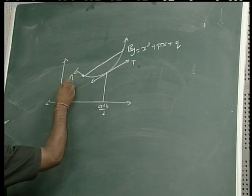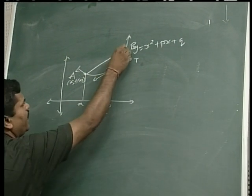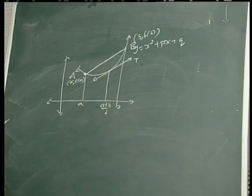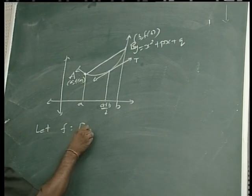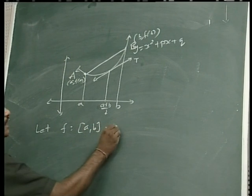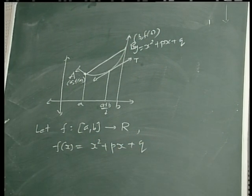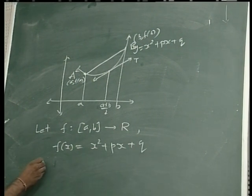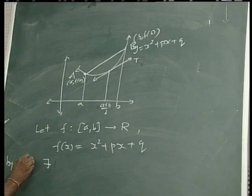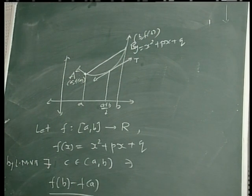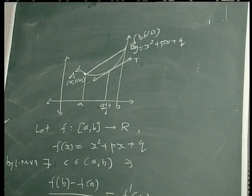Suppose point a has coordinates (a, f(a)) and point b has coordinates (b, f(b)). Now we consider the function f from closed interval [a, b] to ℝ as f(x) = x² + px + q. This function is everywhere continuous and everywhere differentiable because it is a polynomial function. Therefore we can use LMVT, and by LMVT there exists a constant c in the open interval (a, b) such that f(b) minus f(a) upon b minus a is equal to f'(c).